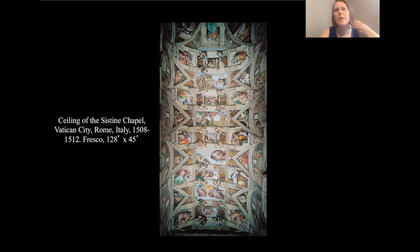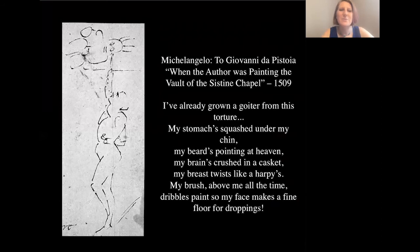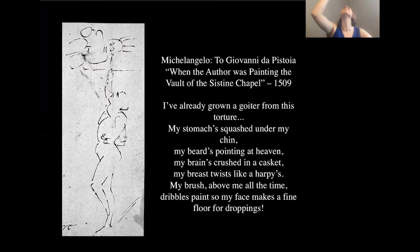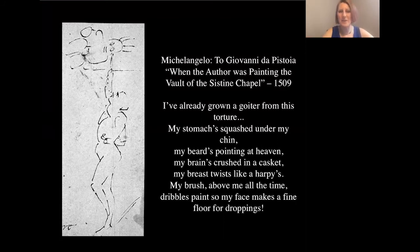Michelangelo is described as an isolated, proud, independent, and temperamental artist. He writes a letter describing the experience of standing on scaffolding 70 feet in the air and trying to paint above him. He didn't do cartoons for this — no preparatory sketches — he kind of goes in and tackles it all at once. You can see this little figure he drew of himself painting, and you can just imagine the paint dripping down on his face as well.